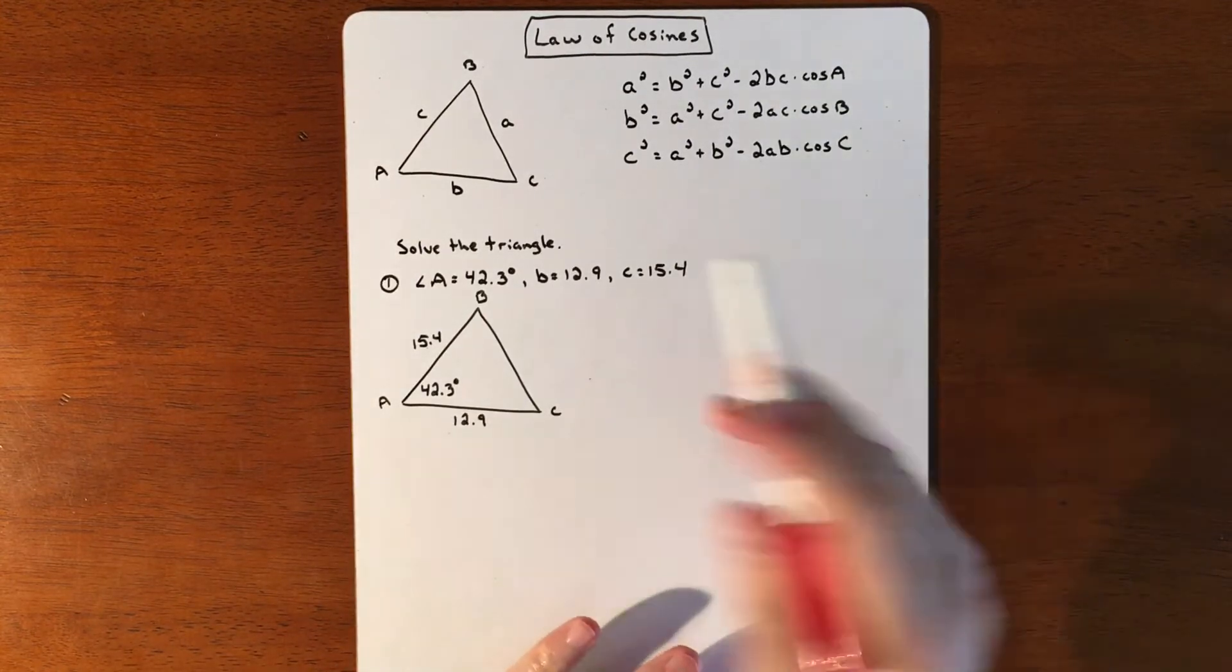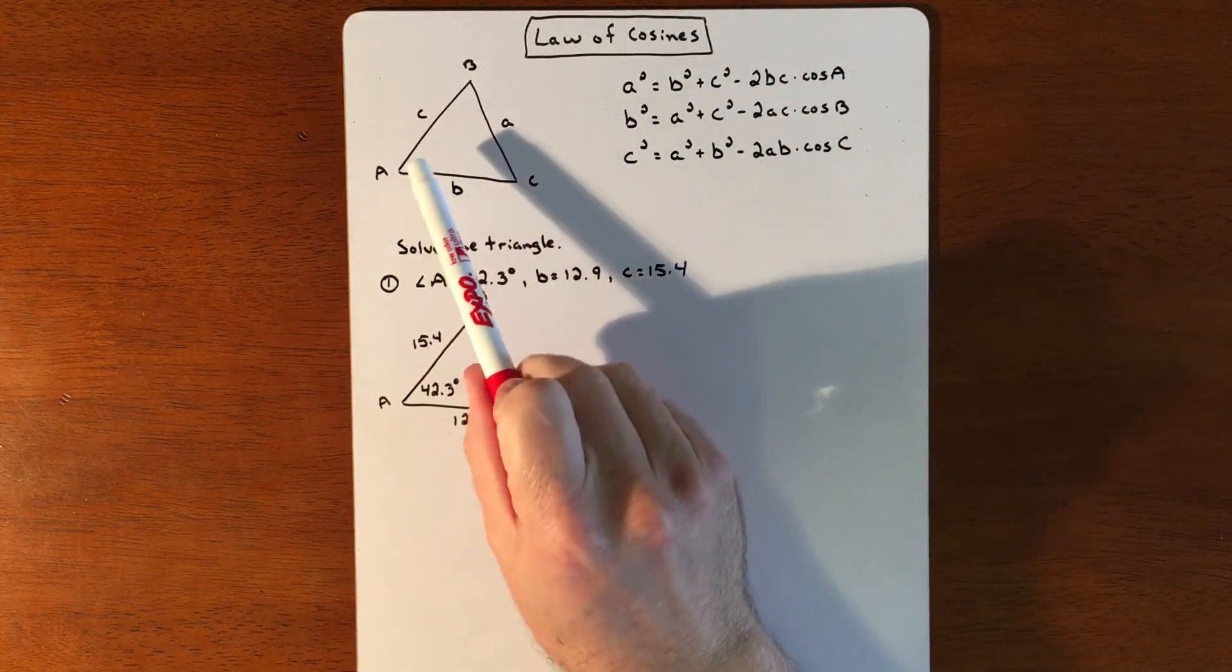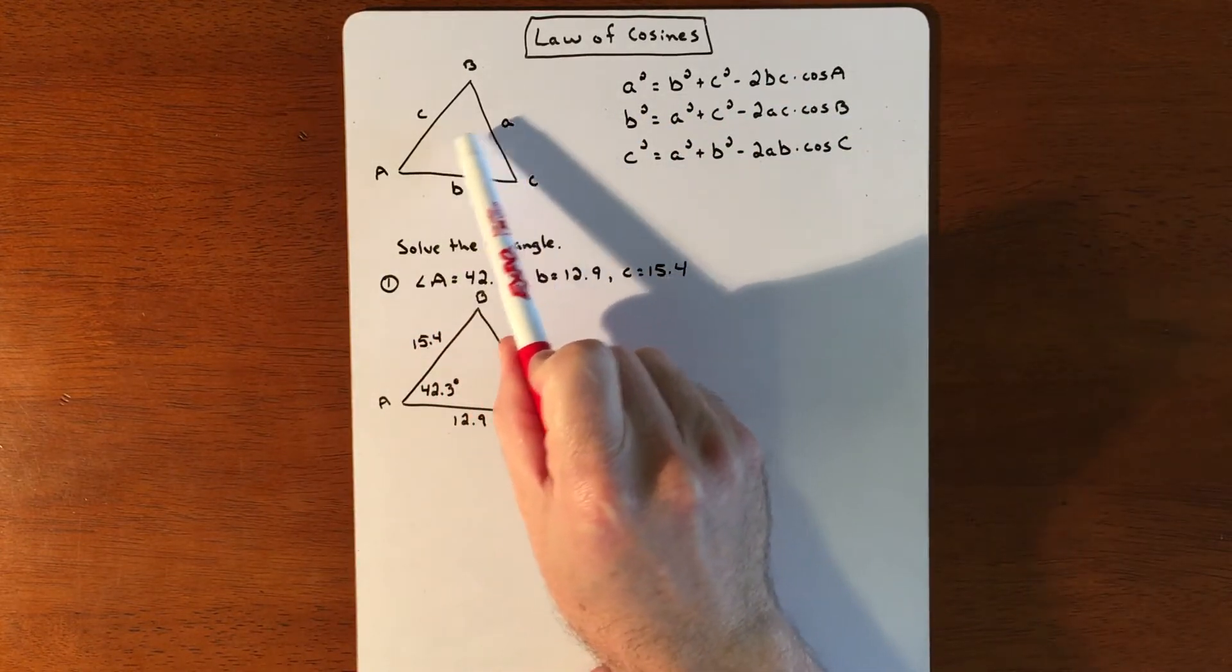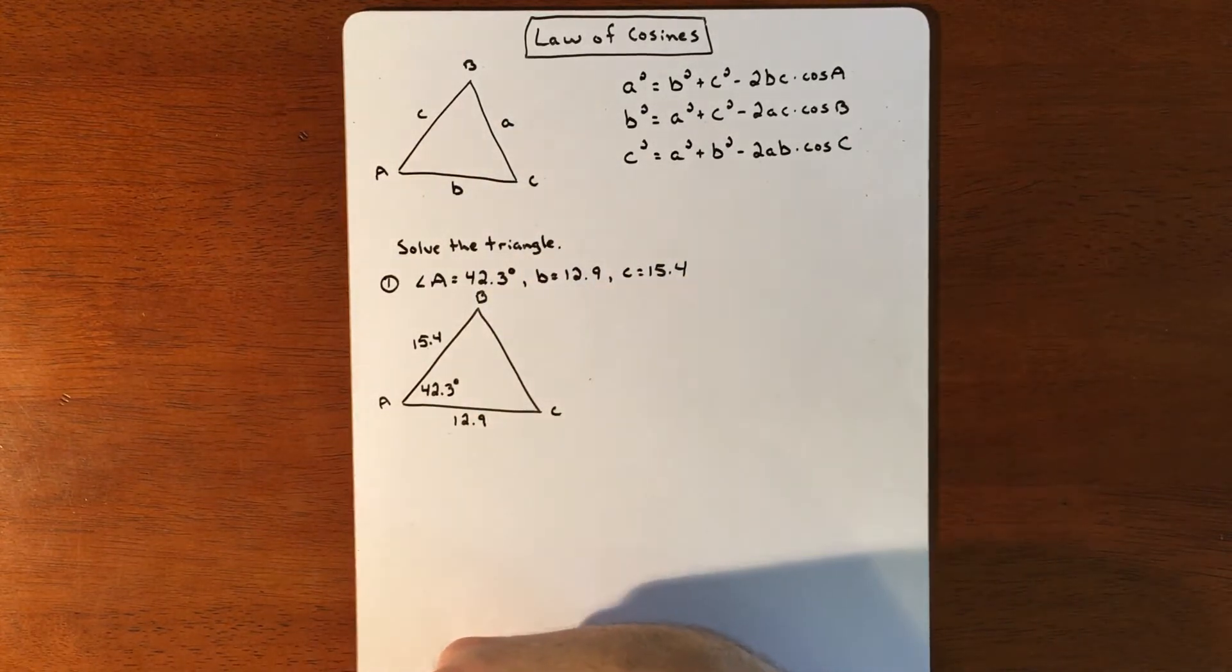Just a real quick note: if you want to use Law of Sines, the only way you can use it is if you have an angle and a side across from it. If you have that situation, you're definitely going to be able to use Law of Sines and not Law of Cosines.